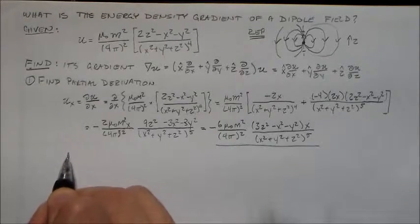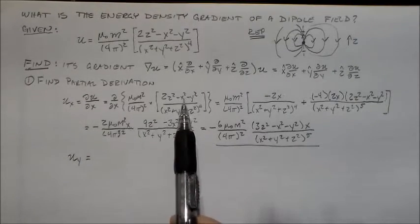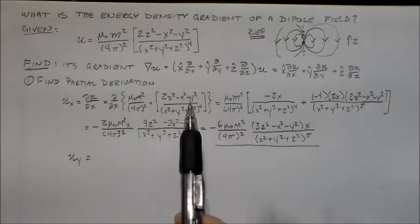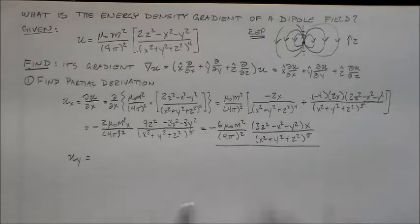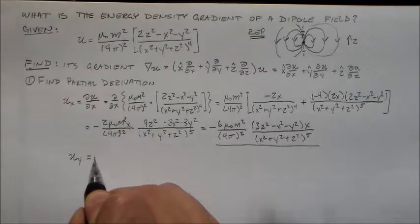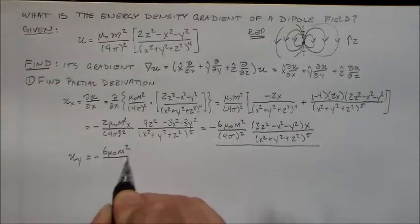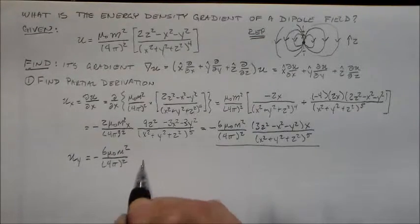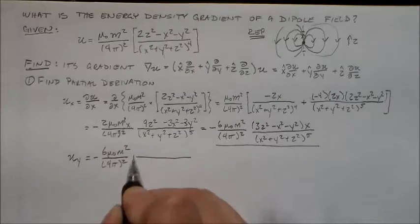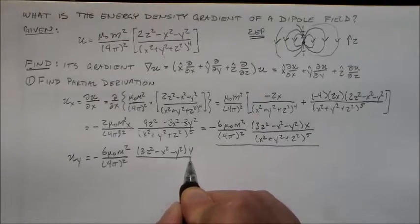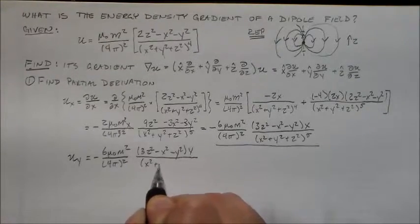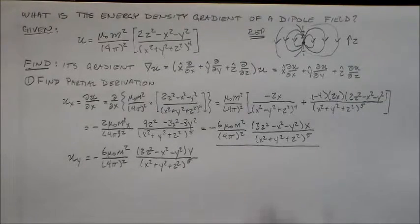The nice thing is this is completely symmetric with the interchange of x and y. If I change all my x's to y's and all y's to x's, I'd have exactly the same function. So except for the x out front, everything is going to be the same if I take the y derivative. So we have minus 6μ₀m²/(4π²) times (3z² - x² - y²) times y over (x² + y² + z²) to the fifth. That's the second partial derivative.